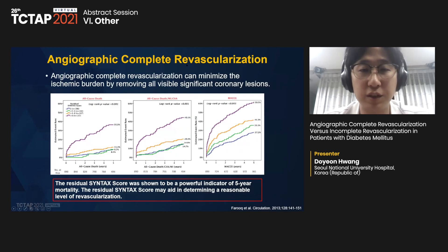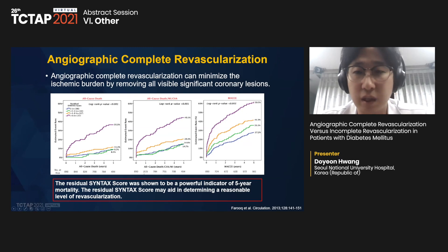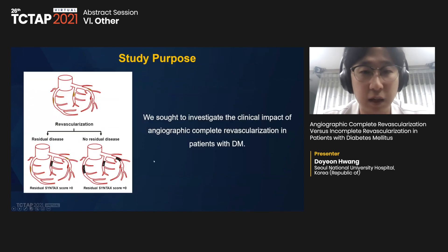Angiographic complete revascularization is an effort to minimize ischemic burden by removing all visible significant coronary artery disease. A previous sub-study of the SYNTAX trial reported that the residual SYNTAX score was a powerful indicator of five-year mortality, and that a residual SYNTAX score of zero can be a reasonable level of revascularization. However, considering the nature of DM, complex PCI can make complete revascularization more challenging, and it remains controversial whether complete revascularization is beneficial in diabetic patients.